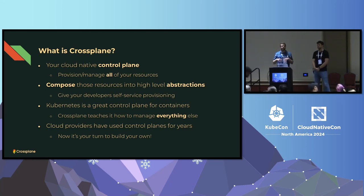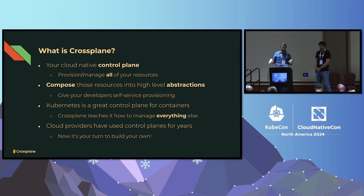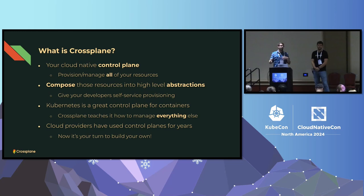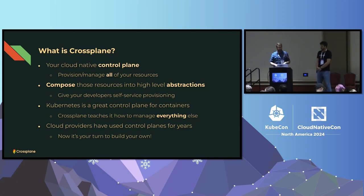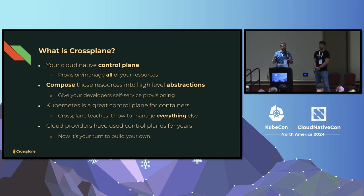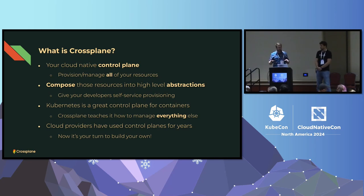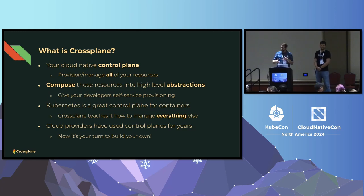For folks that don't know, Crossplane can be considered your cloud-native control plane. It basically helps you provision and manage everything — all your resources. You can compose those resources into higher-level abstractions and expose them to your developers so they can self-service and get the infrastructure they need in a safe manner. Kubernetes is a great control plane — it does great things for containers. Crossplane comes into Kubernetes, extends it, and teaches it how to be a great control plane for everything beyond containers. Control planes are not a new concept; cloud providers have been using them for years to manage their back-end systems, and Crossplane is here to help you build your own control plane.